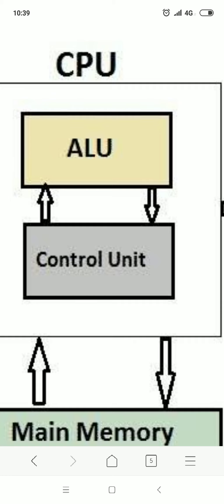Logical operations की बात करें तो मान लीजिए हम compare कर रहे हैं कि 13 is less than or greater than 15. तो जब comparison की बात आती है — less than, greater than, equal to, not equal to — या जहाँ पर भी answer yes or no, true or false में आने वाला हो, ऐसे calculations logical operations कहलाते हैं. और ये logical operations भी ALU perform करता है. तो दोनों तरह के operations — arithmetic यानी mathematical (addition, subtraction) और logical यानी comparison (less than, greater than) — दोनों ALU करता है.